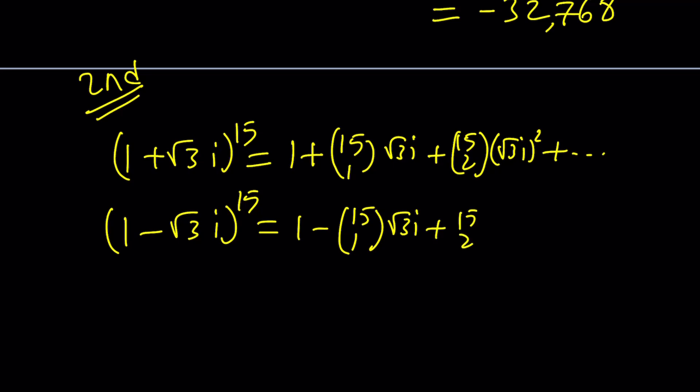And the alternating terms are actually imaginary. So if I add these two things, they're going to cancel out, leaving us with a real number. Does that mean anything? Well, the sum of these two things is going to be a real number, because all the complex terms are going to cancel out.